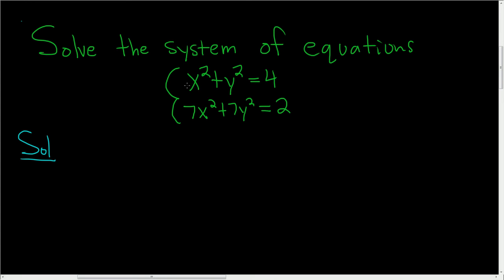So we're going to use what's called the elimination method. We want to get rid of either x or y. So in this case, you'll notice that if we multiply the first equation by negative 7, when we add it to the second equation, we should get 0. So let's go ahead and multiply the first equation by negative 7.